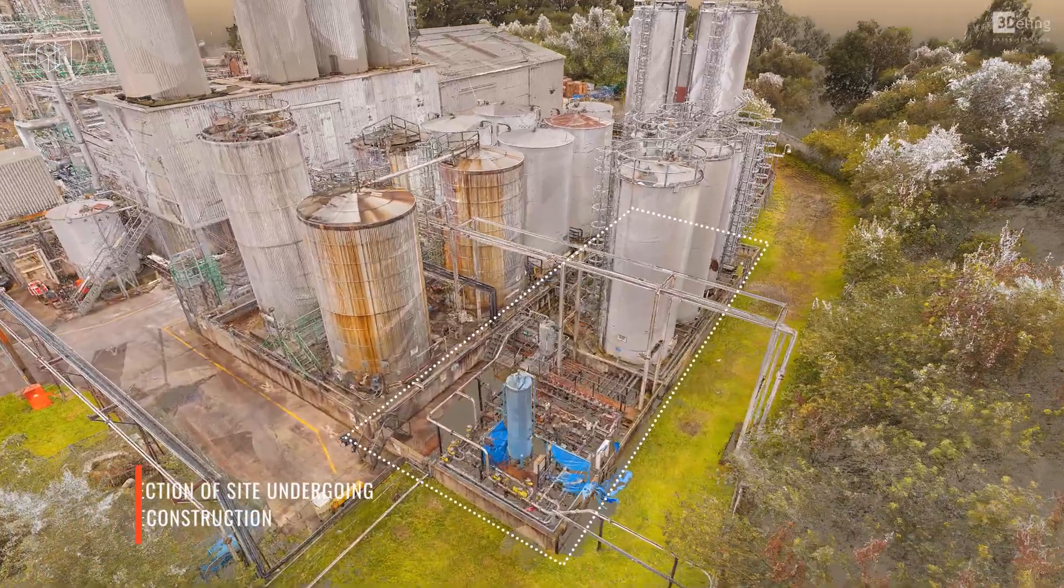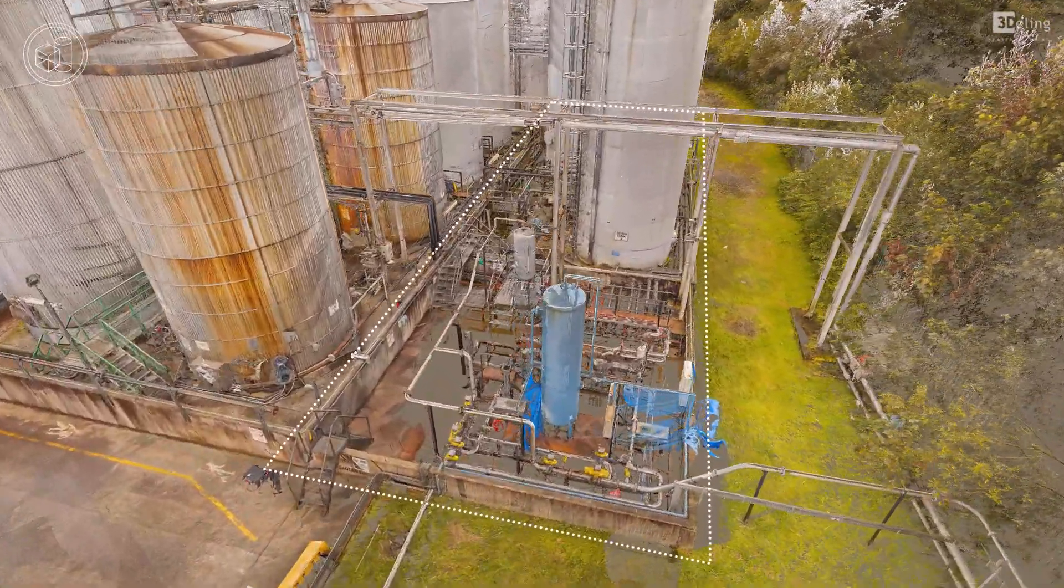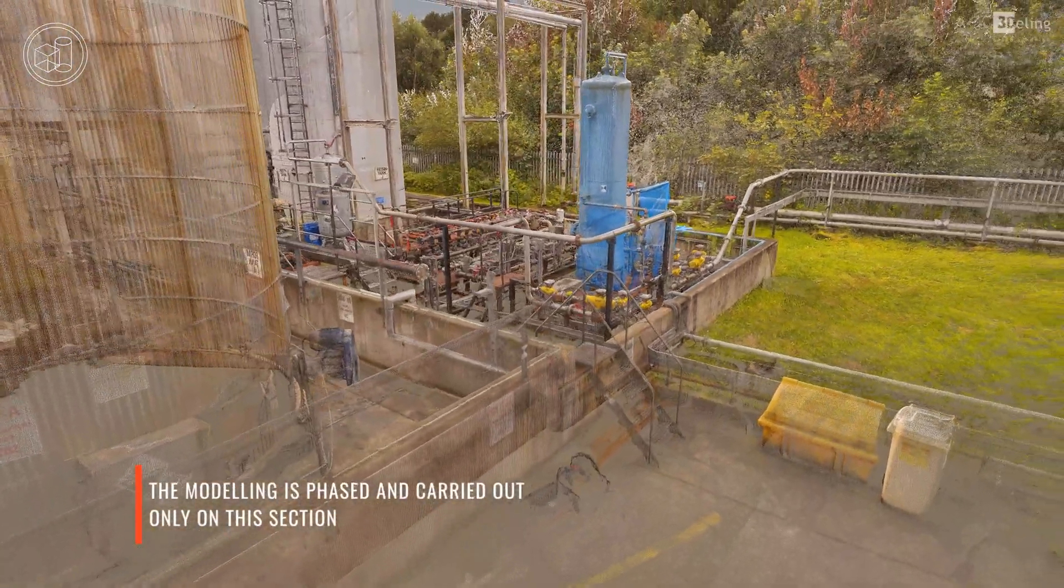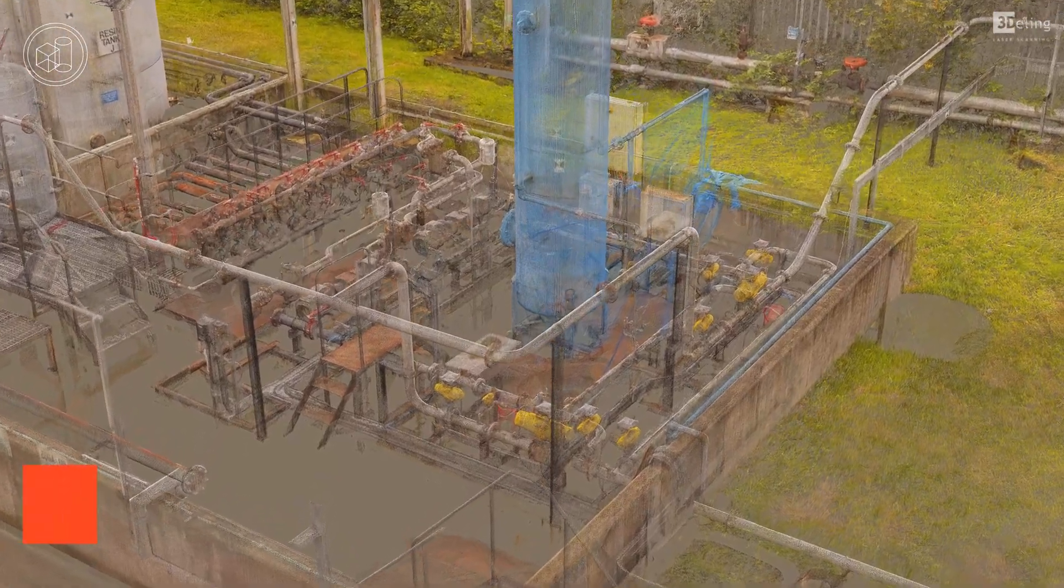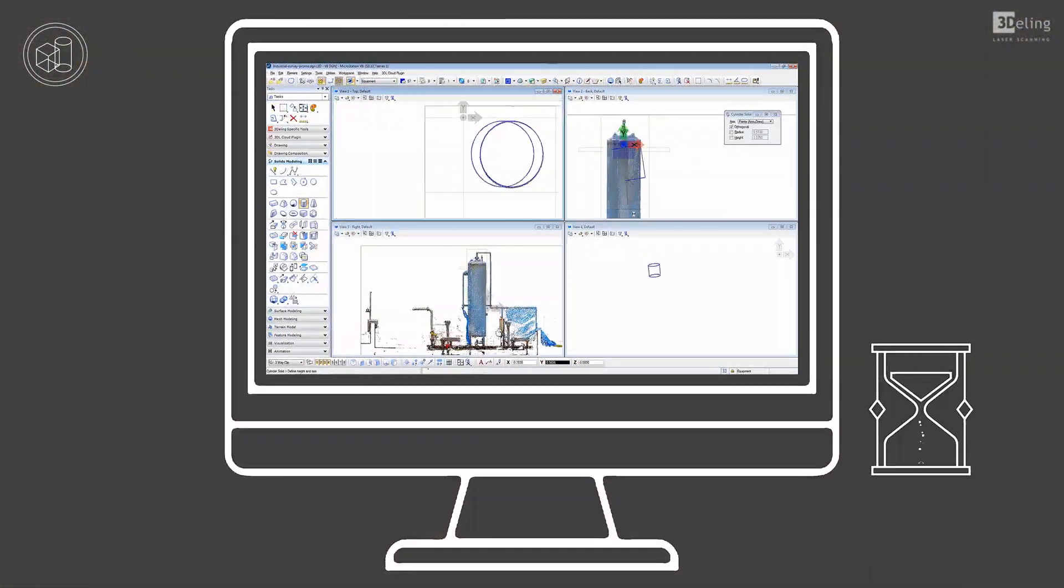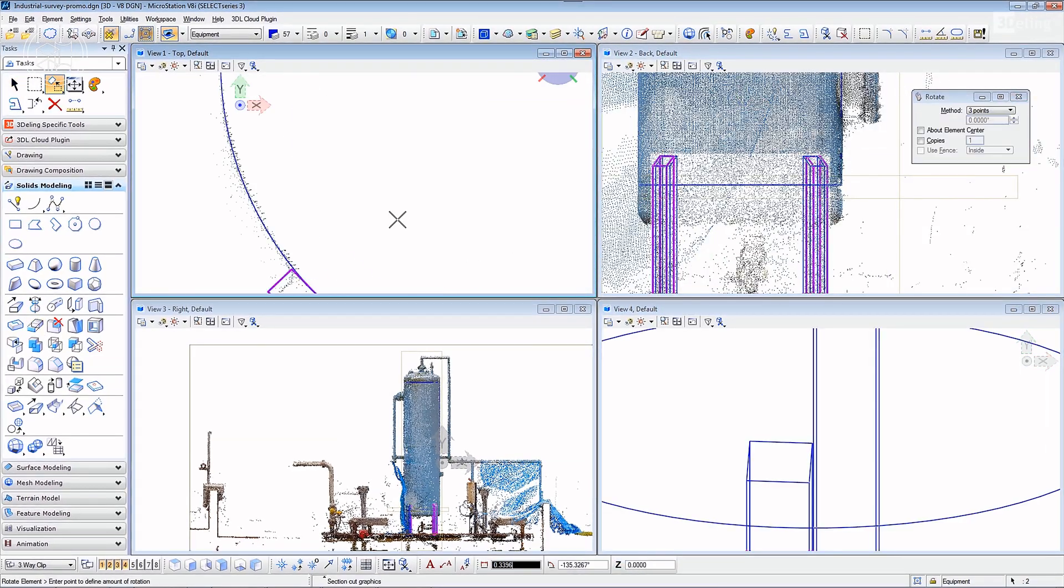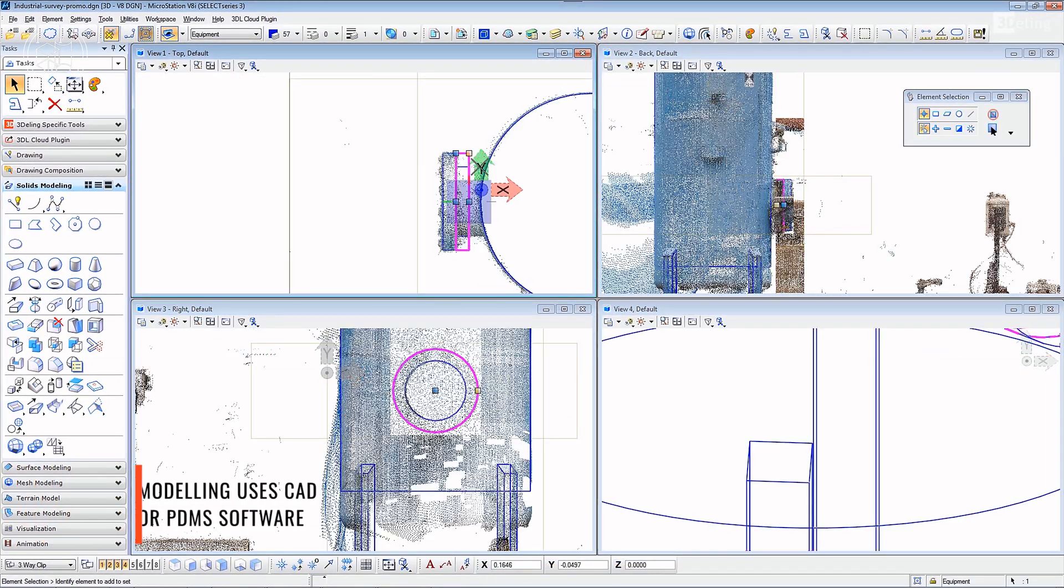Industrial plants are complex structures made of tens of thousands of components. Digitalization offers unprecedented economical and technical benefits in the maintenance and management of industrial sites. When it comes to digitalization, the cost expectation is often much higher than it actually is.